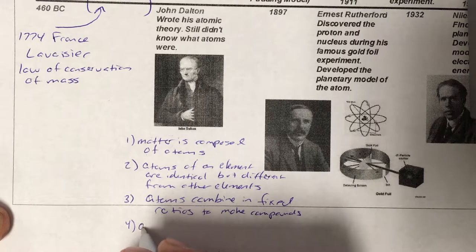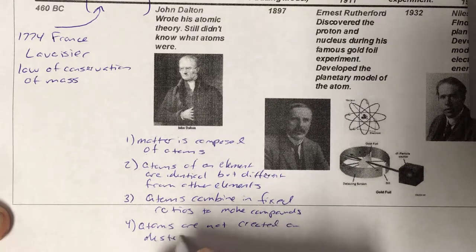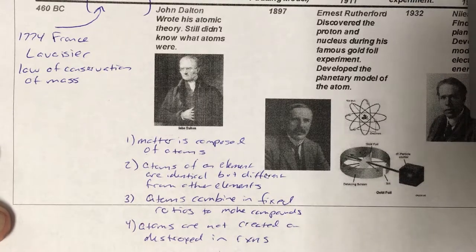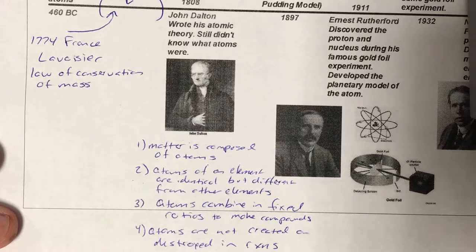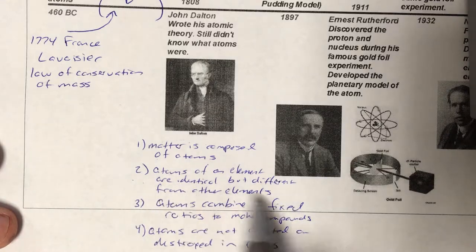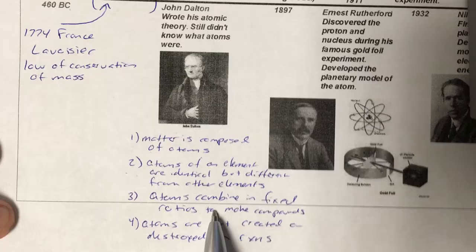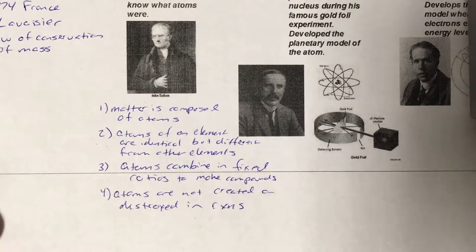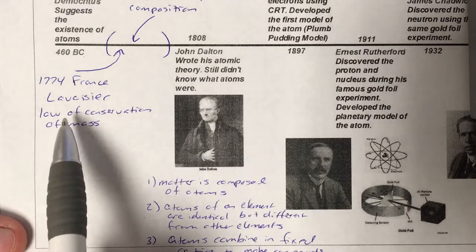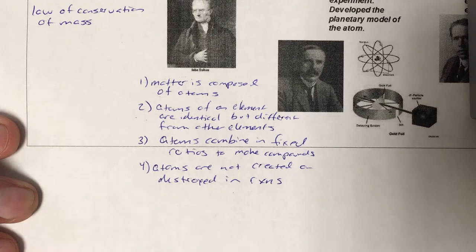Fourth and final: atoms are not created or destroyed in chemical reactions — they're rearranged. That's Lavoisier's idea applied to atoms. Really, of his four points, only the second one is truly his own idea — that atoms of an element are identical but different from other elements. The first is Democritus', the third is Proust's constant composition, and the fourth builds on Lavoisier's conservation of mass. His big original contribution is that second point.